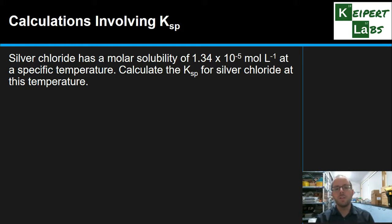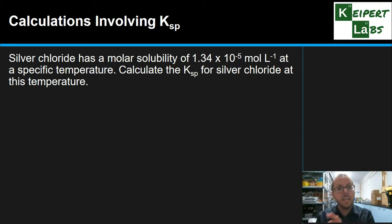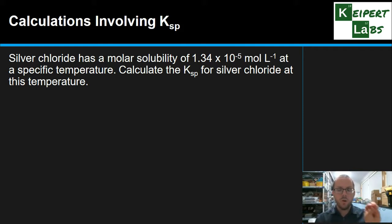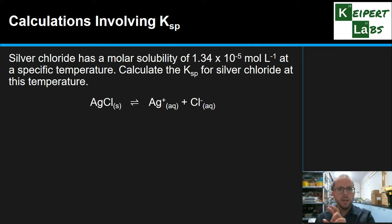So this first one: silver chloride has a molar solubility of 1.34 times 10 to the minus 5 moles per litre at this particular temperature. That means 1.34 times 10 to the minus 5 moles of silver chloride will dissolve in every litre of water at this temperature. Calculate the KSP for silver chloride at this temperature. One thing to be careful of is that this refers to moles of silver chloride as a whole compound — we need to work from the compound to its ions. For every one silver chloride, we make one silver ion and one chloride ion.